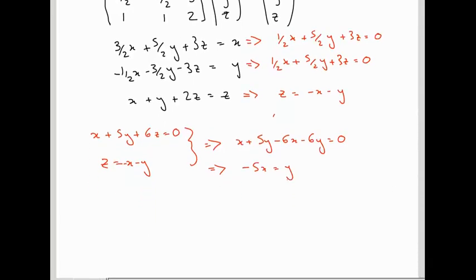So, our eigenvectors are going to be of the form X minus 5X and then minus X minus Y. Y is minus 5X, so plus 5X. In other words, X minus 5X, 4X.